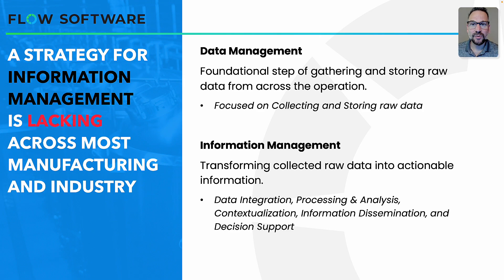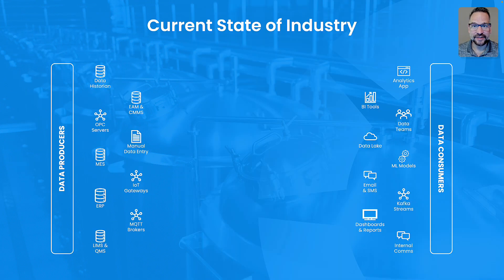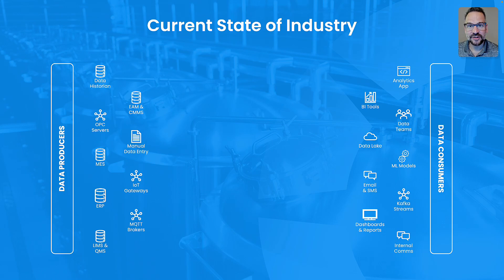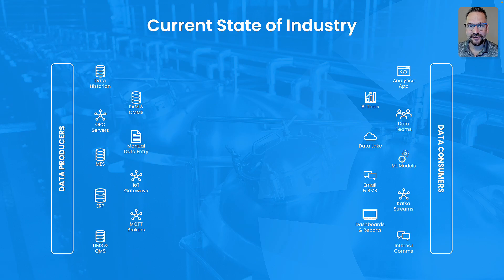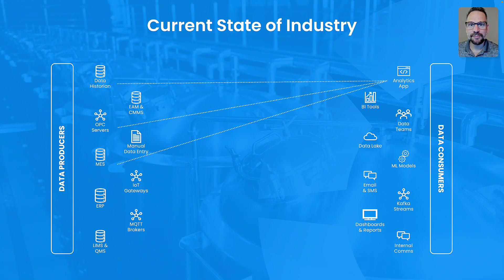Across industry, what has been occurring for the last 30 years is the grouping of data consumers and data producers. Data producers are simply those things that are storing data across our operation. Data consumers are people, applications, and reporting tools that need access to that raw data. We've been following the same type of raw data transformation processing for 30 years: we pick an application, we connect data sources to it, and then we go through a process to turn that raw data into insight.